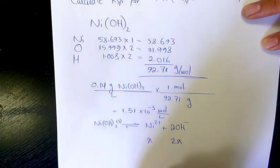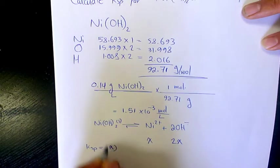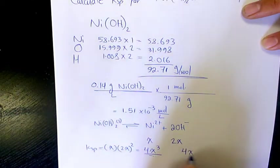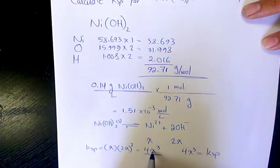So Ksp will be x to the power of 1 times 2x to the power of 2. That's going to make it 4x³. So 4x³ will equal Ksp, and the value of x is the solubility we just found.